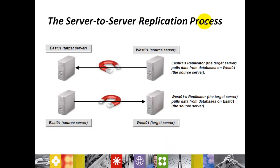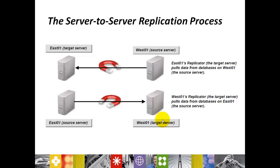Server-to-server replication process. For example, we have two different servers: East and West. The East server is the target server and the West is the source server. The target server East, which acts as the replicator, pulls data from the database on the West source server. Always the target server pulls data from the source server. This is how server-to-server replication happens.